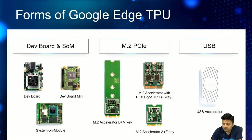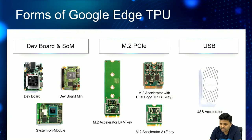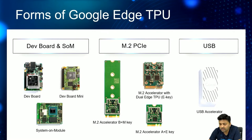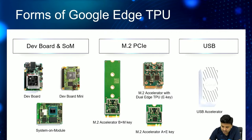There are different types of Google TPUs in the market, which we can broadly classify into three parts. The first is development boards and system-on-modules. The second is M2 PCIe slots — with three subtypes: M2 accelerator B+M key, M2 accelerator with dual Edge TPU E key, and M2 accelerator A+E key. And the third type is the USB accelerator.